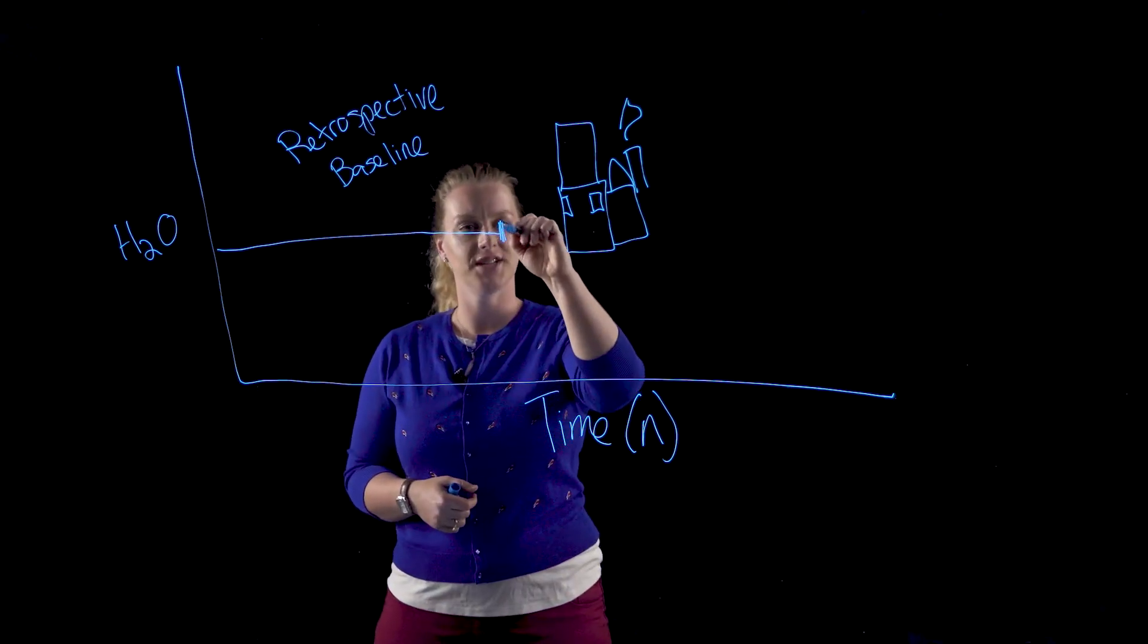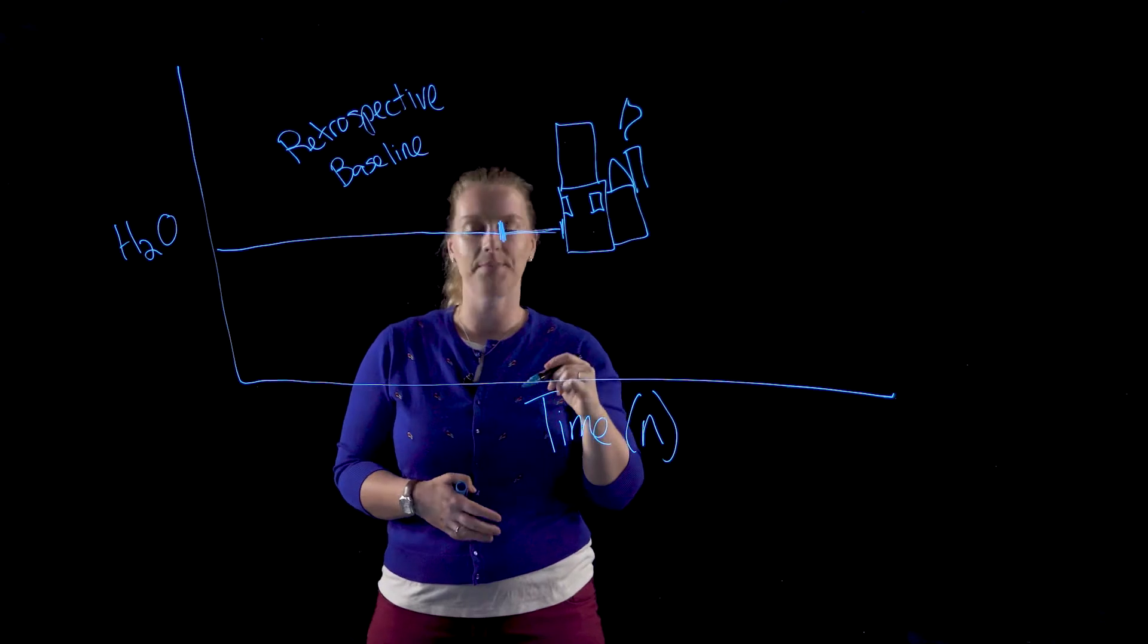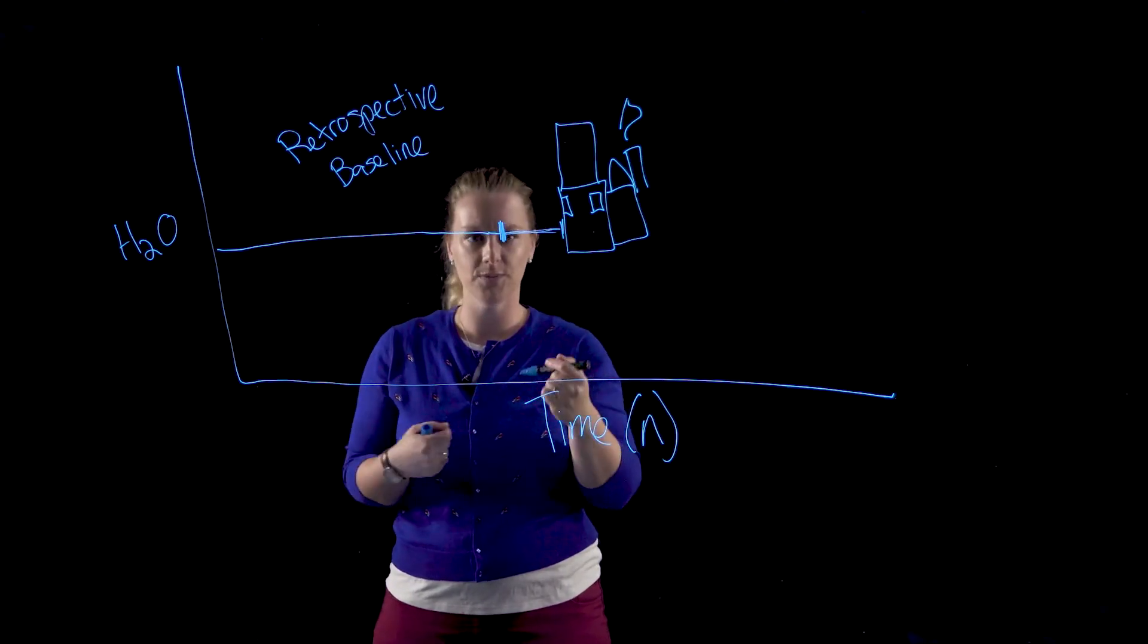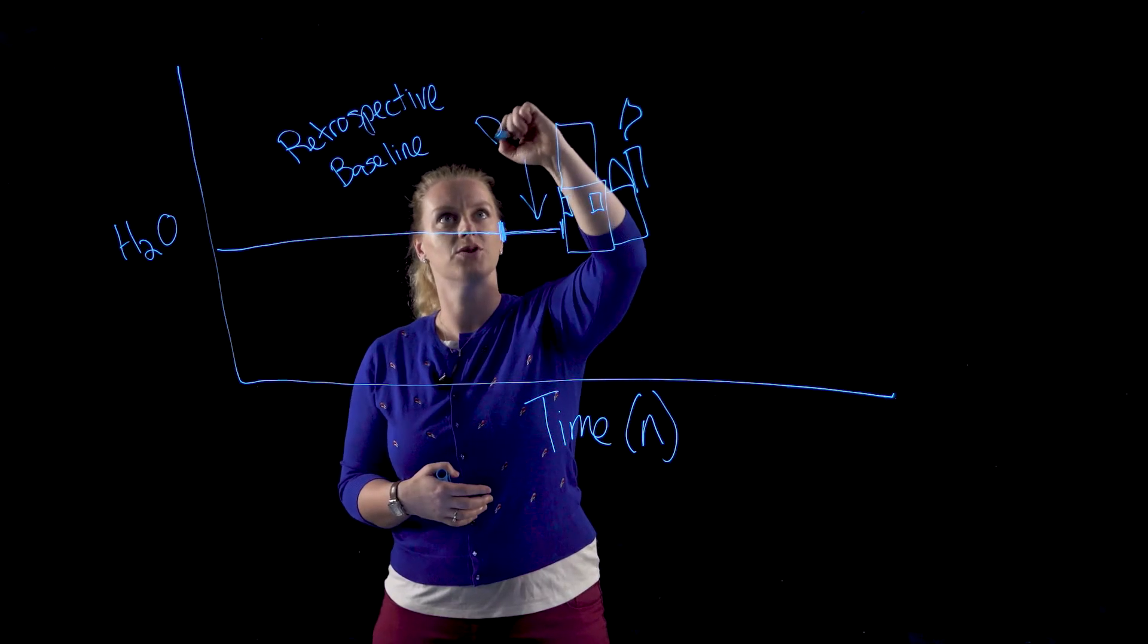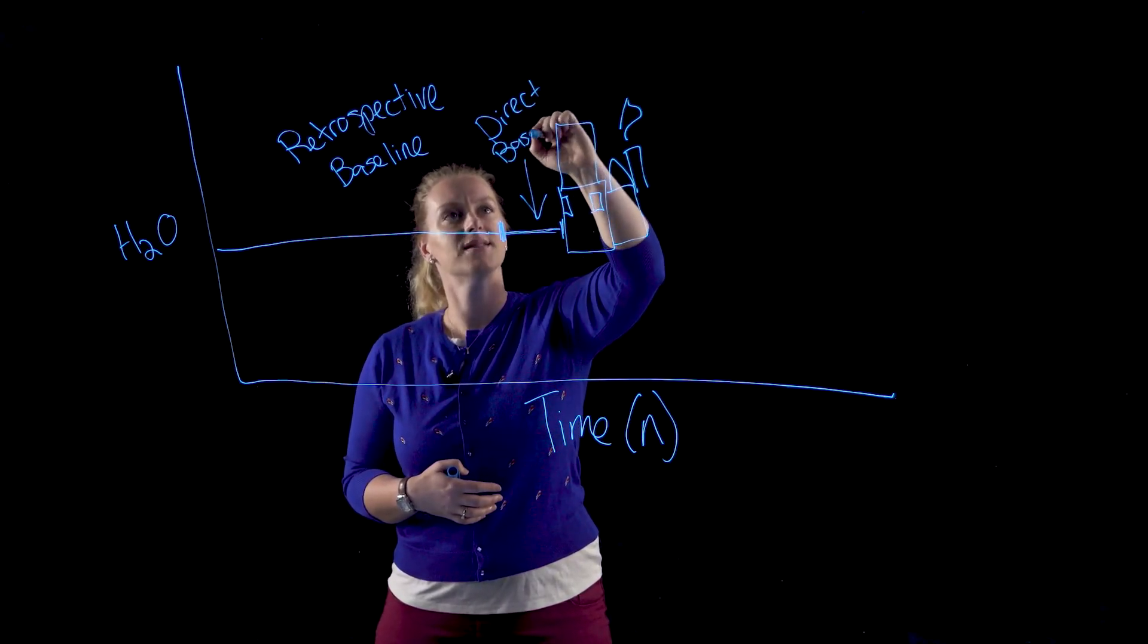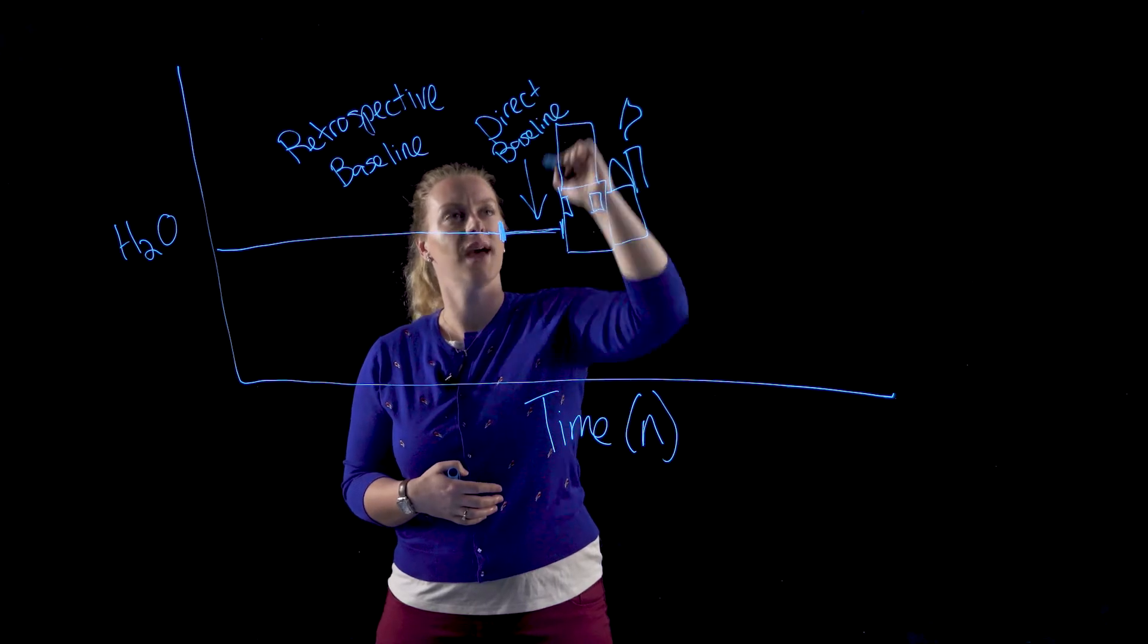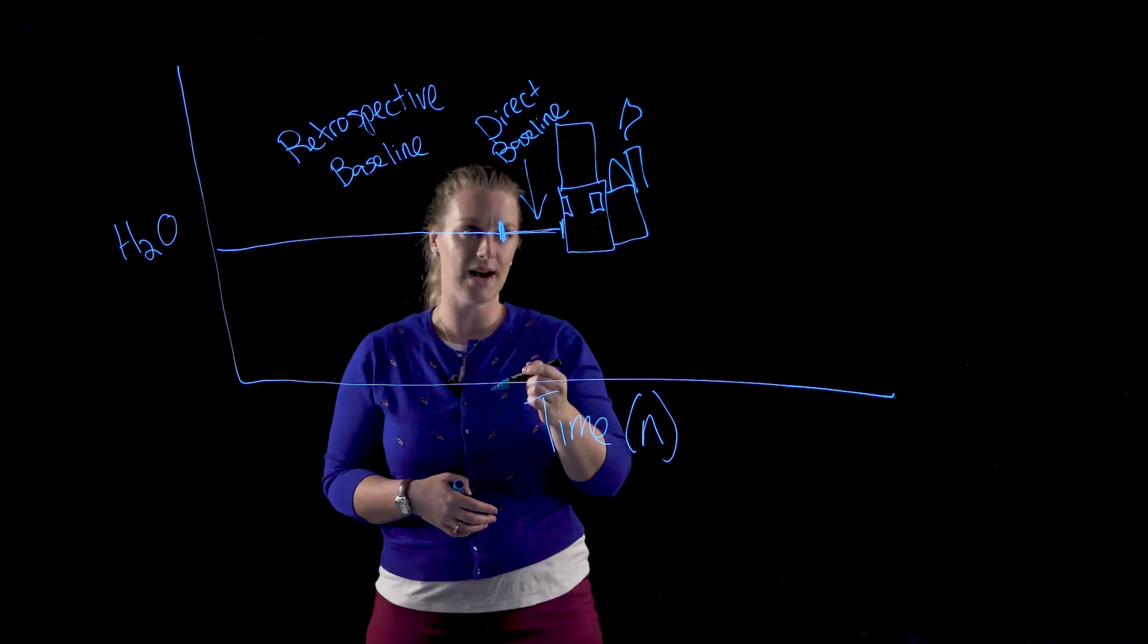Now the other condition of your baseline is what's happening right now. What is happening if you go out to the site, scoop some water, sample it for water quality? This is your direct baseline, and this is often the easiest to analyze, the cheapest to analyze. You just go to the site and you know exactly what's happening.